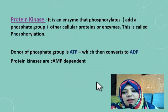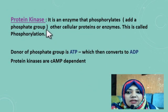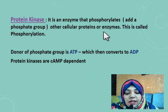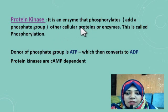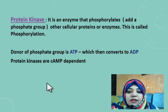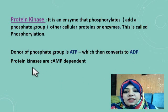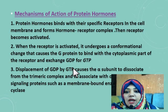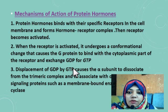Now let's look at the protein kinase enzyme. It is an enzyme that phosphorylates other cellular proteins or enzymes — a process called phosphorylation — by adding a phosphate group. The donor of the phosphate group is ATP, which is then converted to ADP. An important criterion is that protein kinases are cyclic AMP dependent.